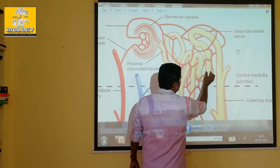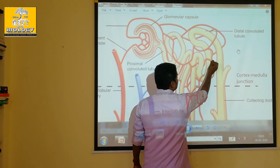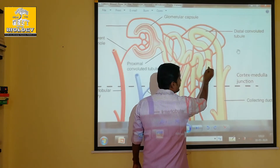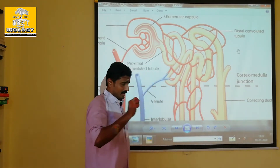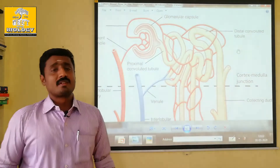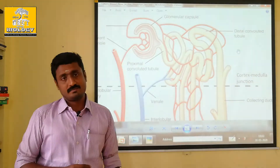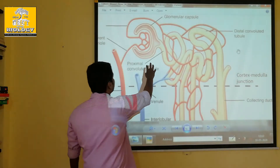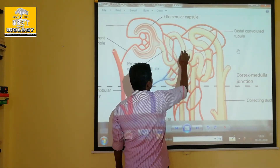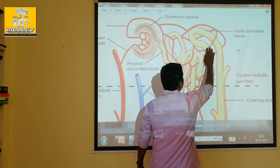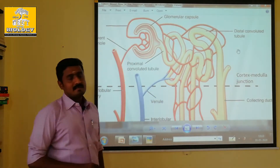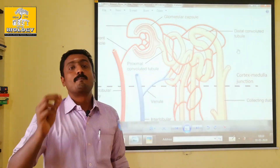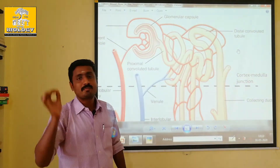This is the distal convoluted tubule, and this is a blood vessel. Here is ADH, and here is the filtrate. The distal convoluted tubule is involved in blood circulation — water moves back to the blood cells.